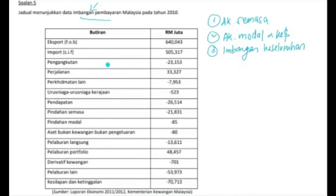Sekarang kita cuba tengok maklumat yang telah diberikan melalui jadual tersebut. Kita ada butiran, dan ingat kita pakai RM juta. Kita ada eksport, lepas tu FOB dan juga import CIF. Apa itu FOB, apa itu CIF?